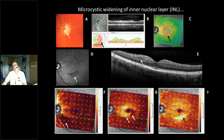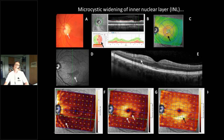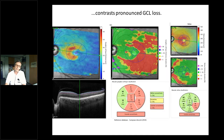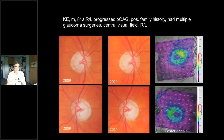Microcystic widening of the inner nuclear layer combined with thinning of the ganglion cell layer means total retinal thickness has not changed, so it's not flagged. Therefore, look at the ganglion cell layer directly in good segmentation. If you suspect cystic spaces, look at the vertical scans of your macula to detect them. The loss of ganglion cells is nicely flagged in the deviation map, where we see pronounced loss in upper and lower halves — this is a very much progressed patient from 2009 to 2014.